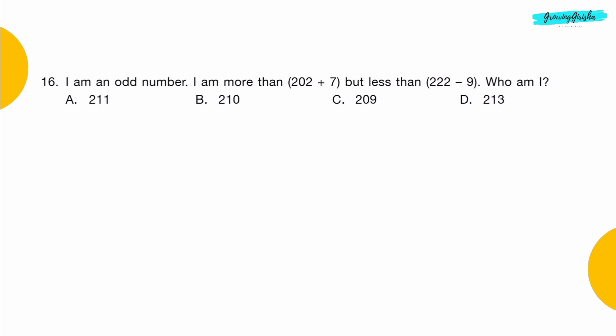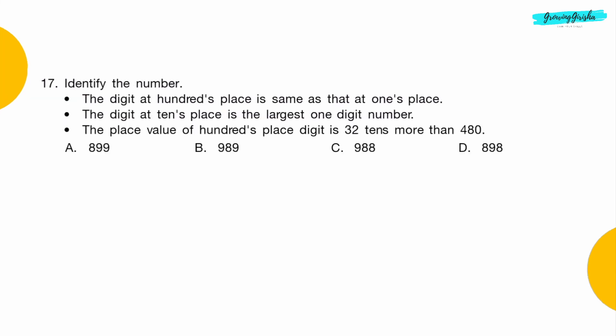Question 16: I am an odd number. I am more than 202 plus 7 but less than 222 minus 9. Who am I? Option A: 211.